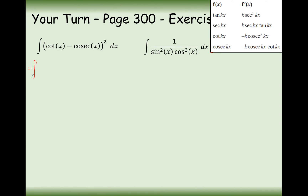For the first question, I'm going to expand the brackets to get cot squared minus 2 cot x cosec x plus cosec squared x. There's nothing on my formula booklet that tells me how to integrate cot squared directly. The cot cosec term is a derivative in my formula booklet, so that's fine. Cosec squared is also a derivative in my formula booklet. The thing I need to sort out is cot squared.